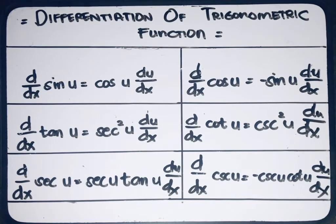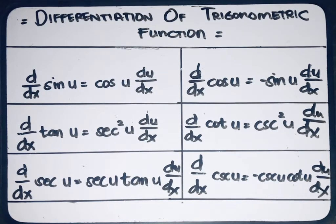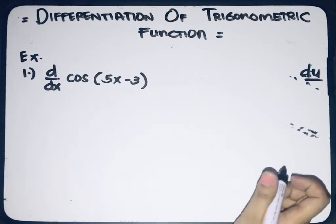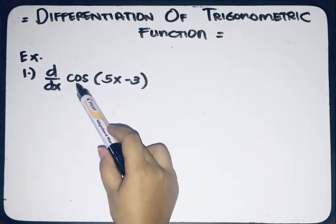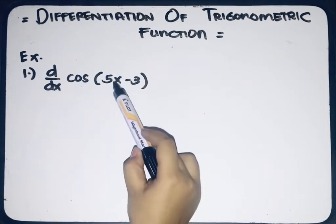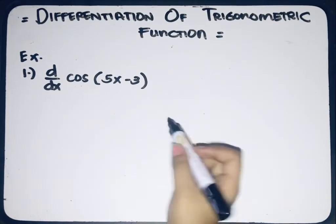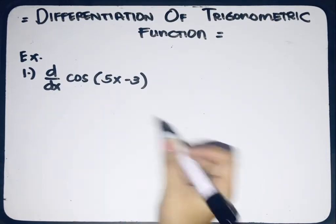I want you to write down all these formulas because we're going to use all of them in the examples I'll be presenting. Okay, first example: the derivative of cosine 5x minus 3 with respect to x.